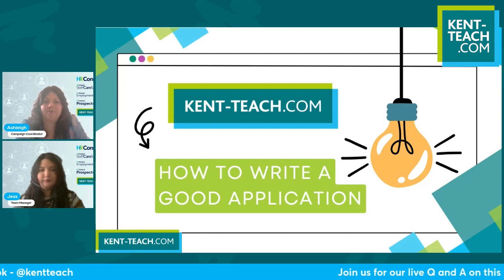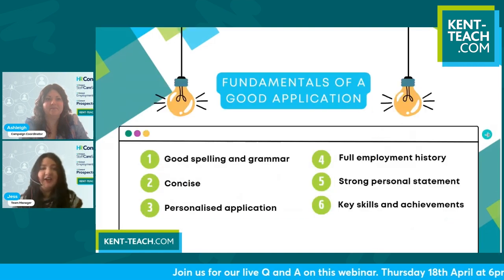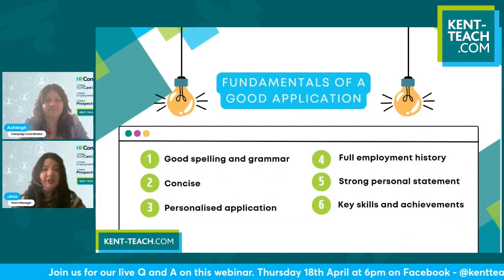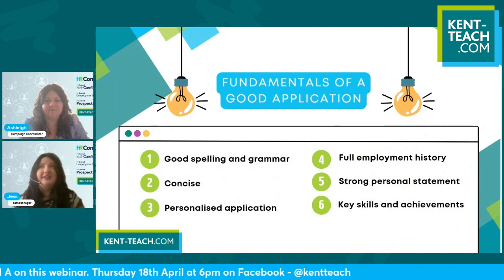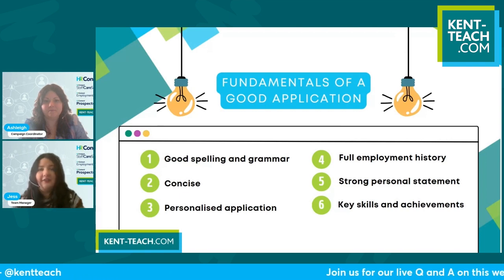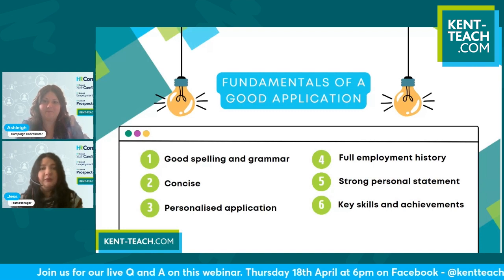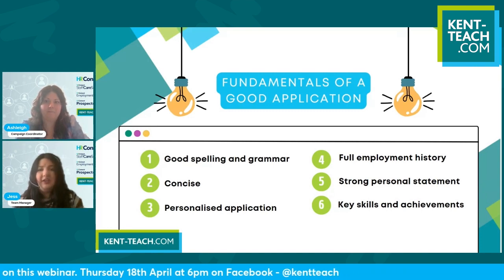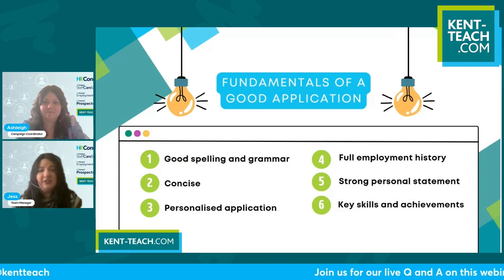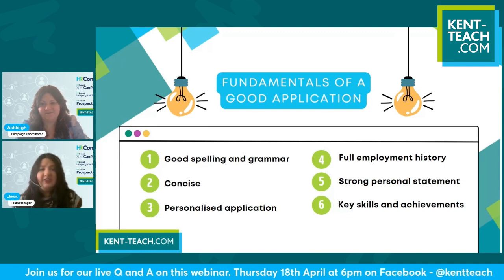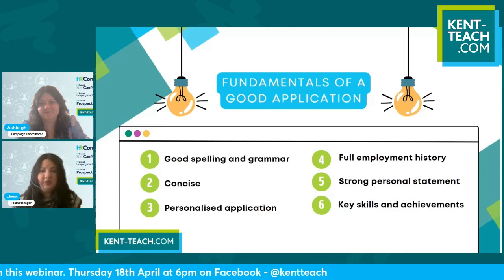Jess is going to start by talking about some of the fundamentals of a good application. So there are six fundamentals to a good application. Number one is good grammar and good spelling. This is vital regardless of which role you are in within a school. There's always going to be some form of written communication that you're going to have to take part in, so making sure that you're able to demonstrate that within your application is really important. Number two is remaining concise. Make sure you are sticking to the information that is relevant to the role you're applying for and to the person specification. Rather than going off on a tangent, think about what you're writing. Whilst you may enjoy certain hobbies, consider if they're relevant and how they can help you within the role that you're applying for.